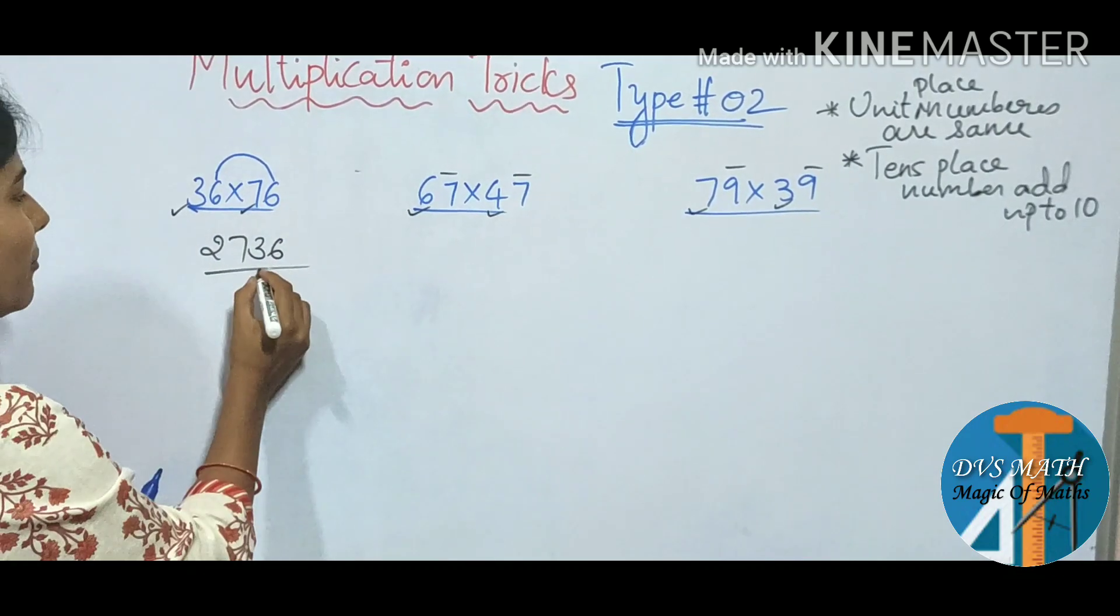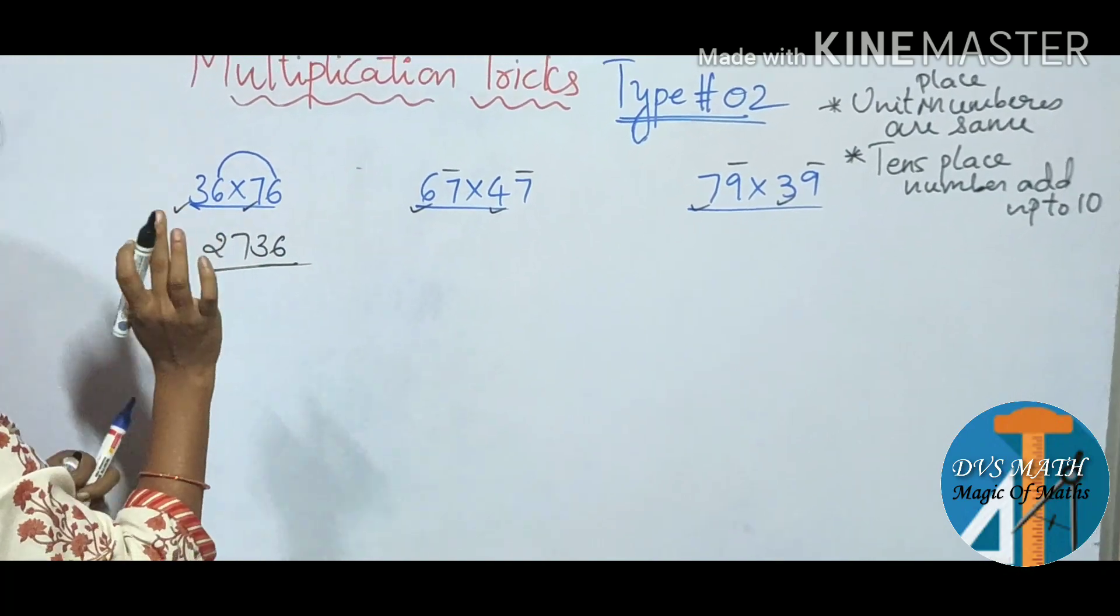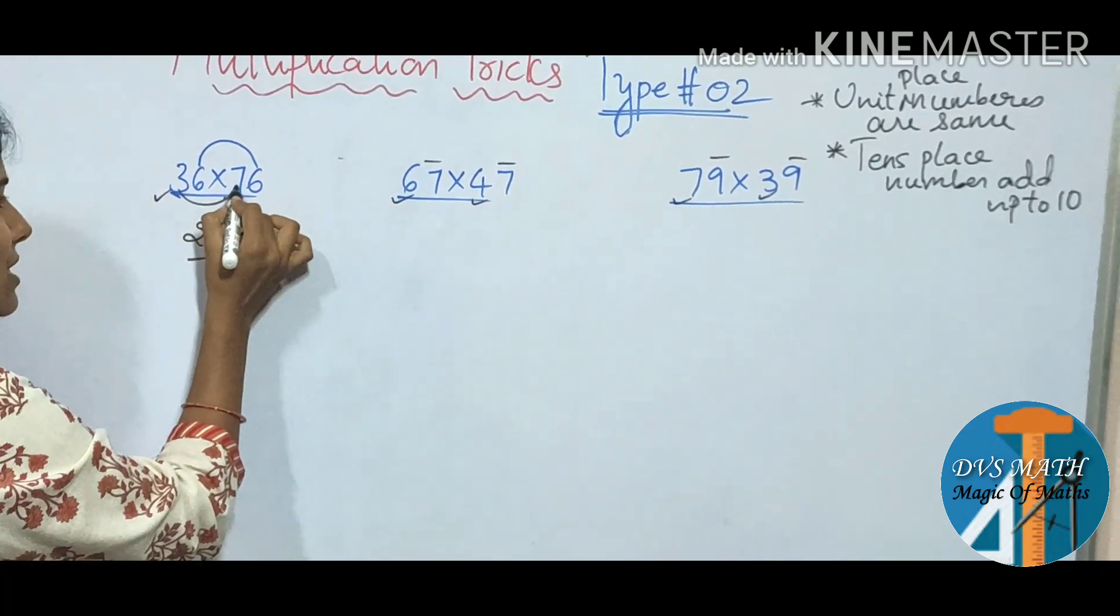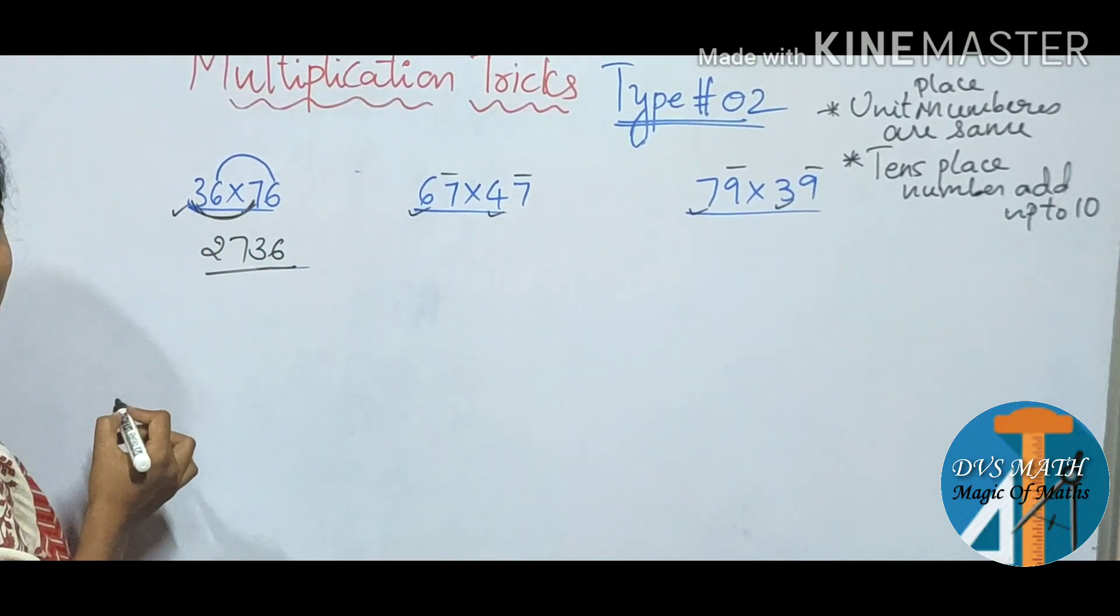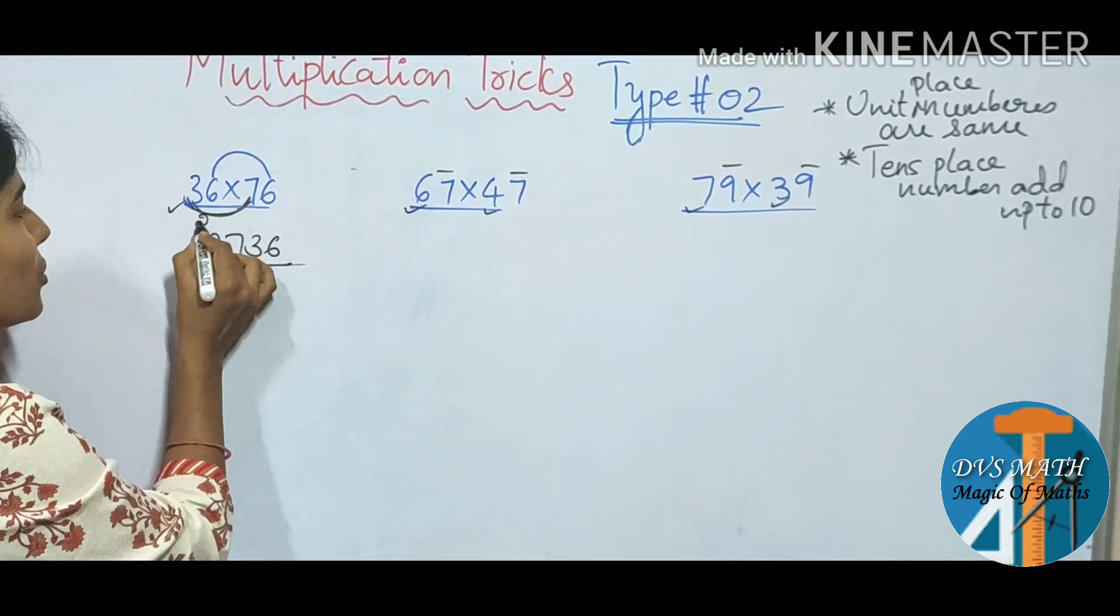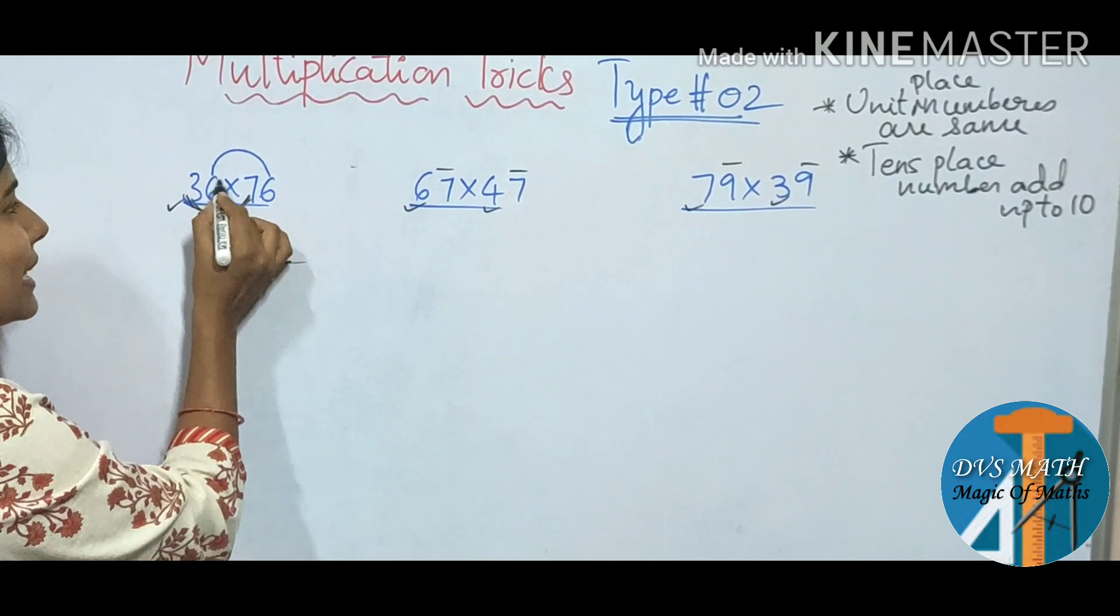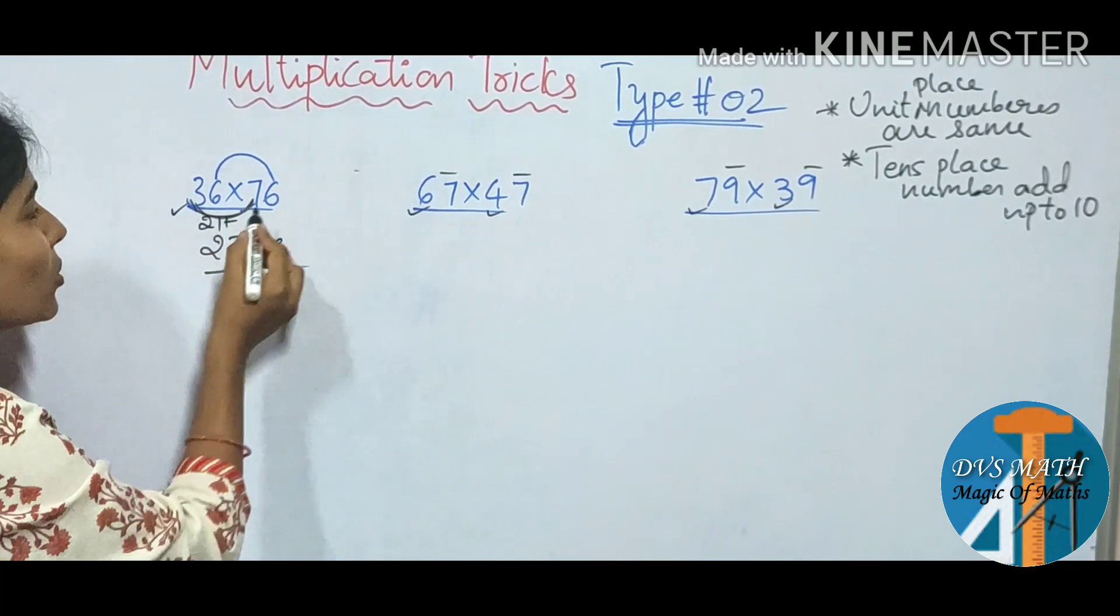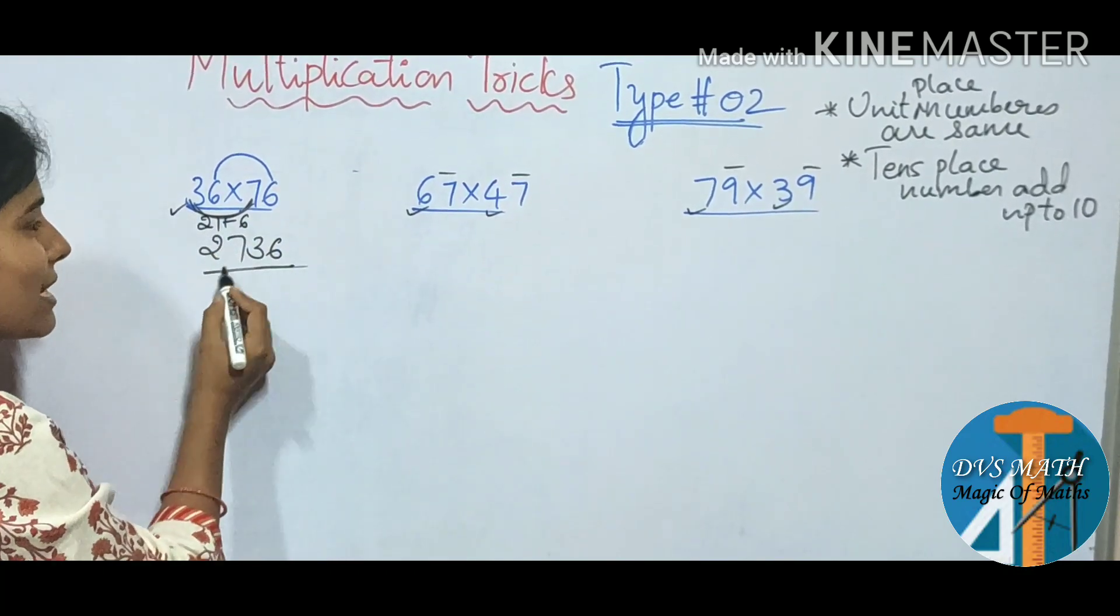So 36 into 76. Next, this is the important number. First, we multiply the number in the 10th place. 3 7s is 21 plus the same number is 6. So 21 plus 6 is 27.